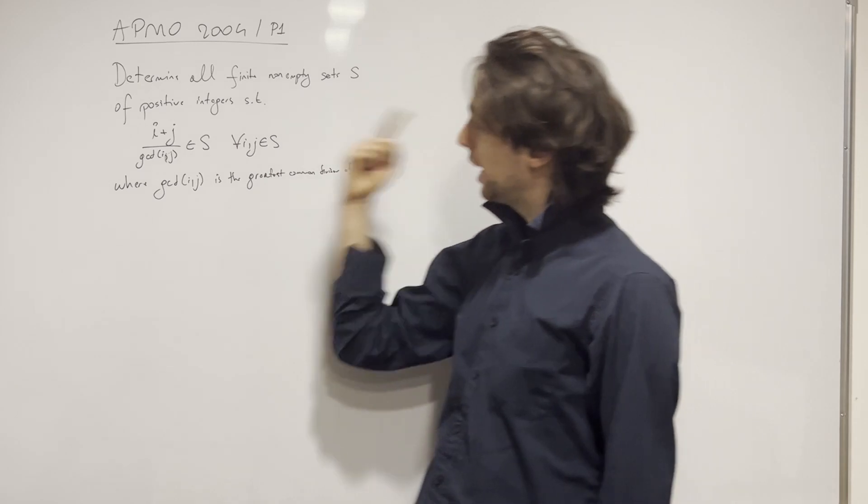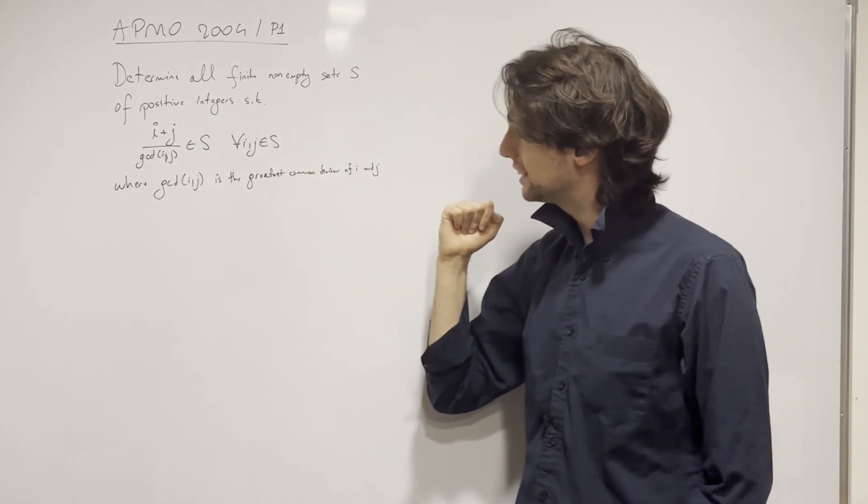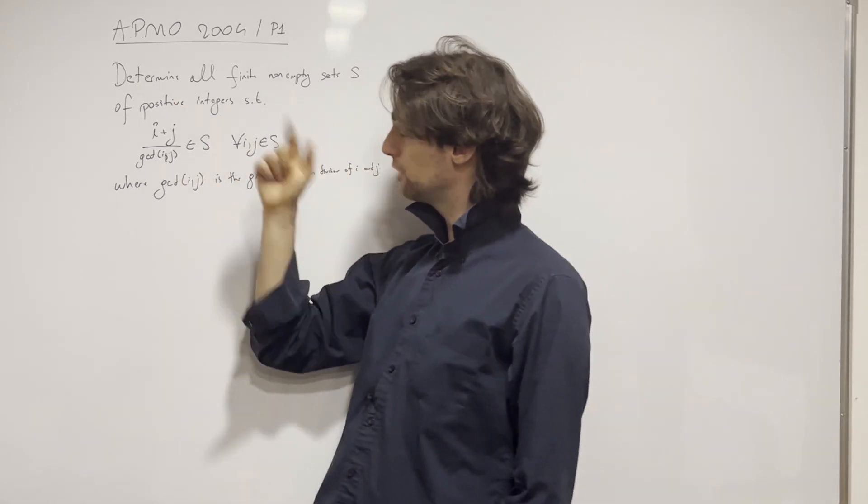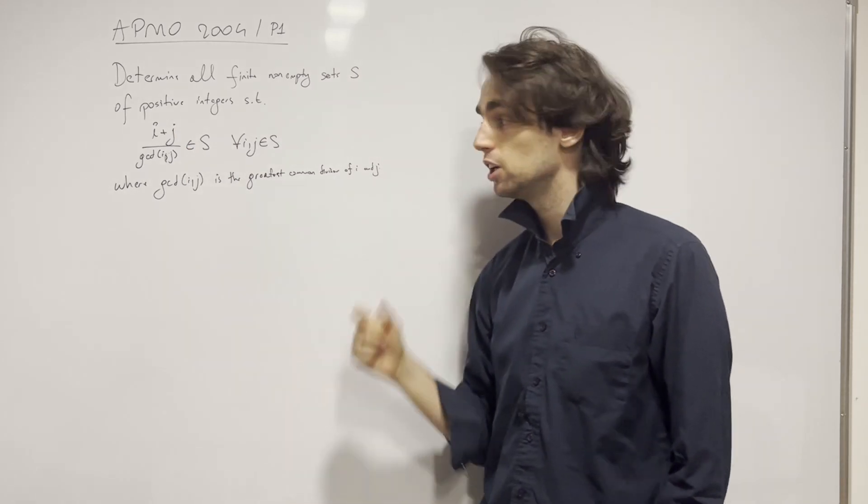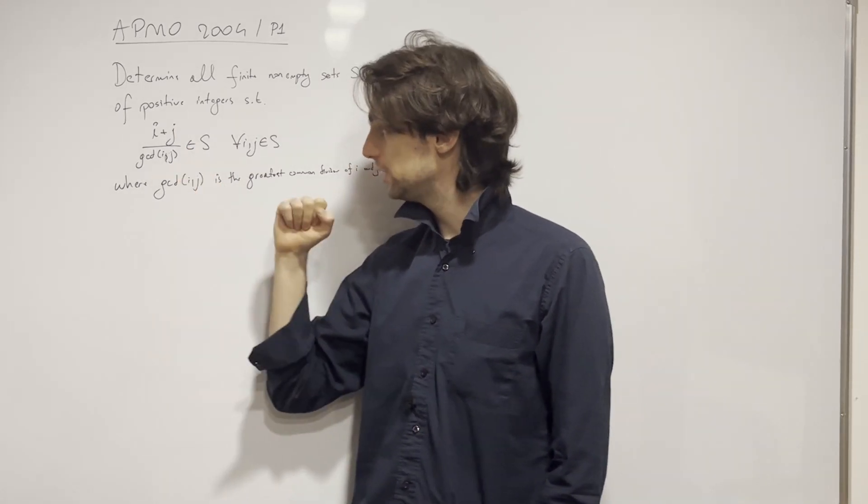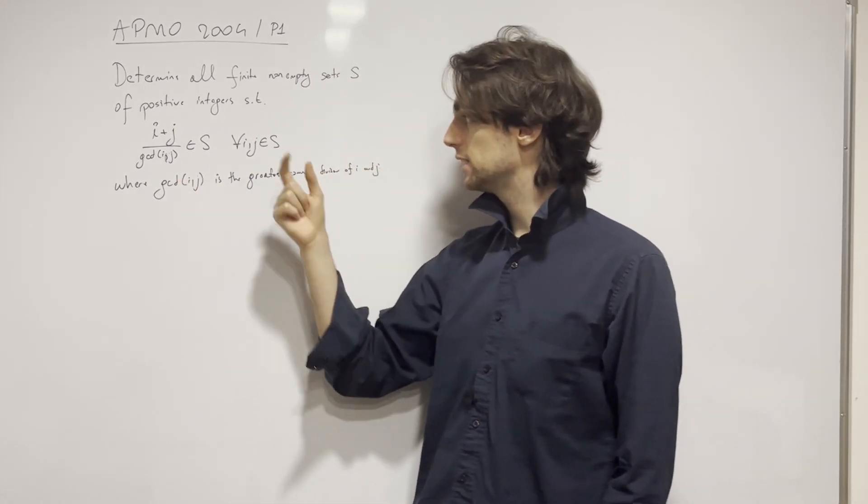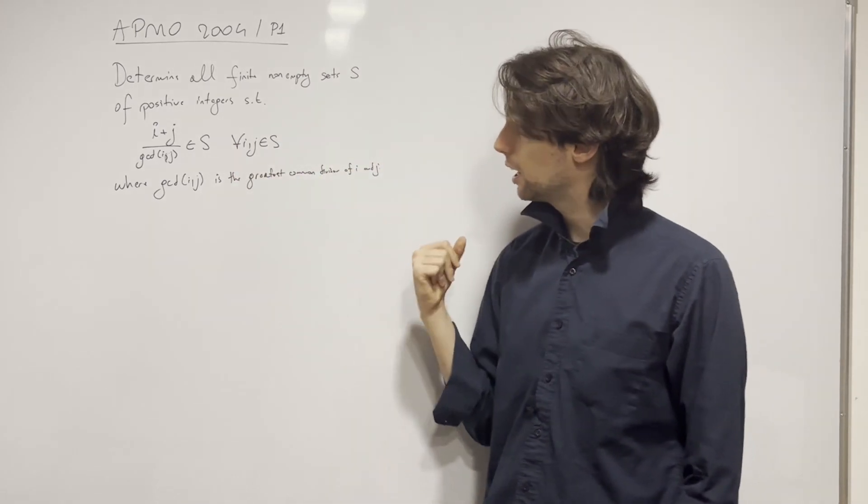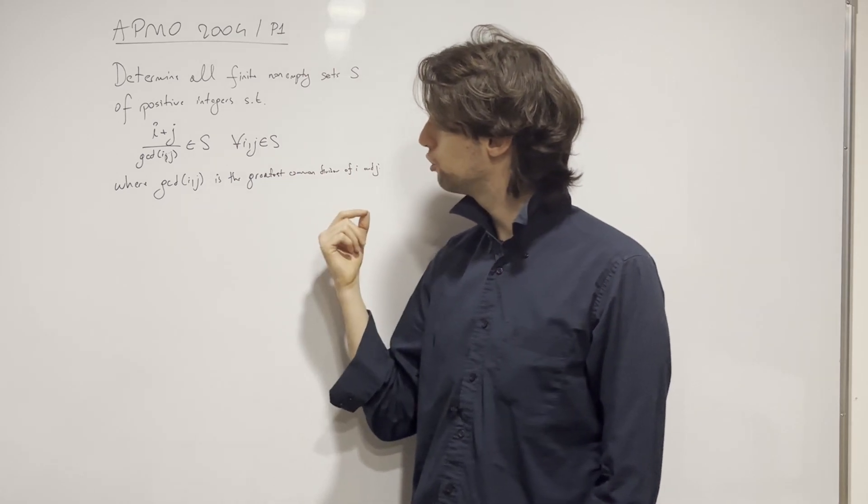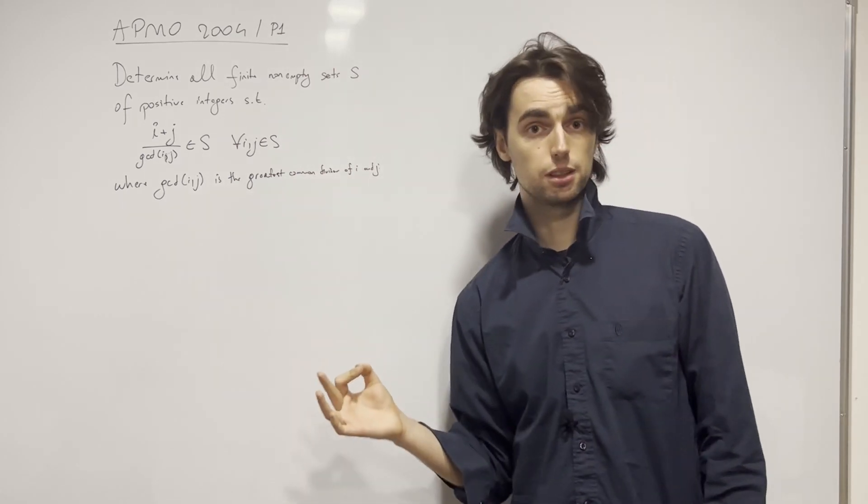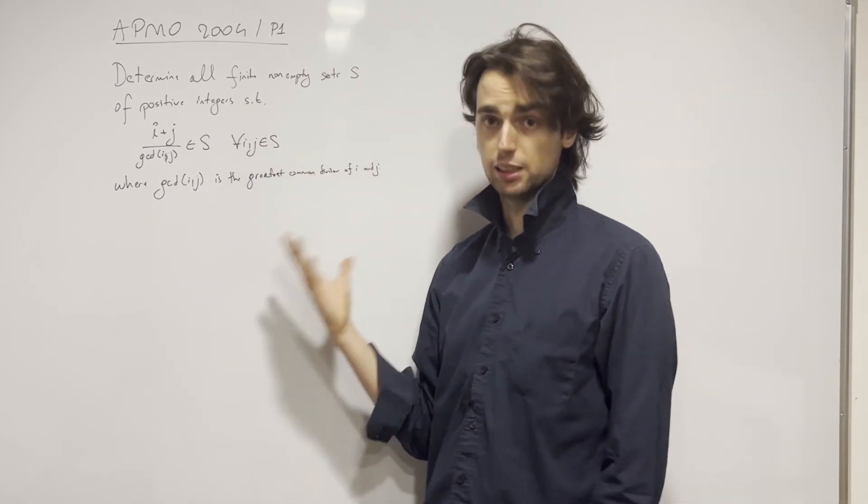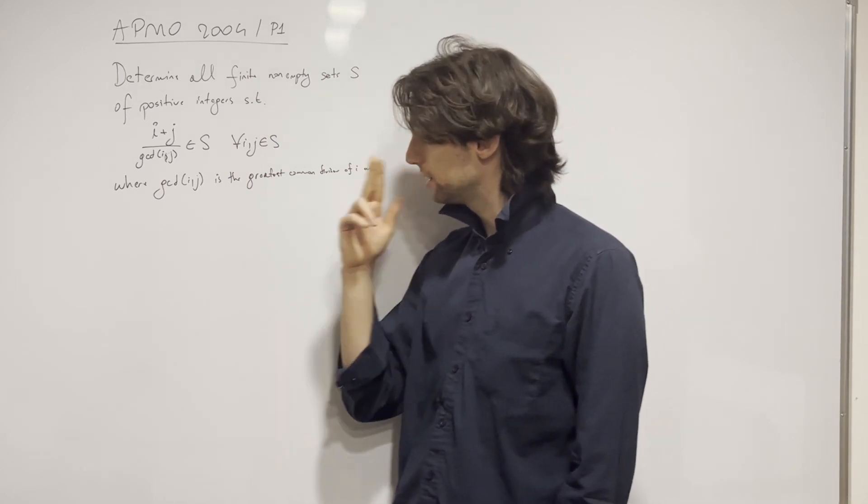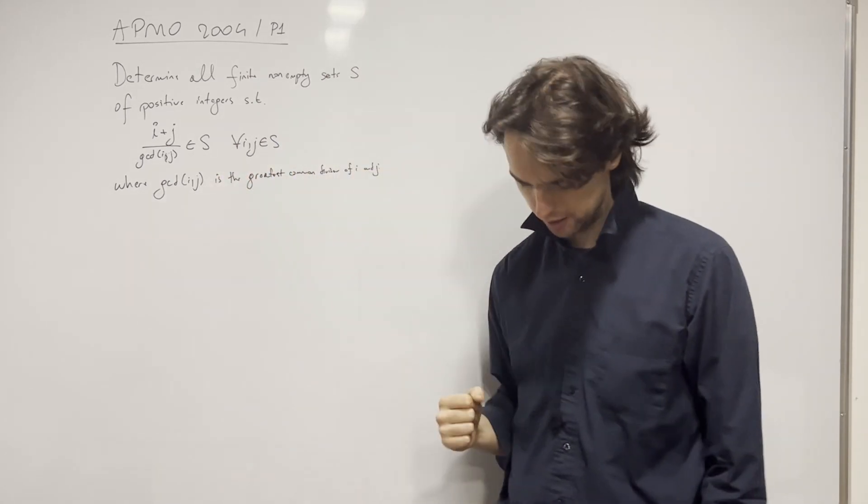So it says find all finite non-empty sets S of positive integers such that (i+j)/GCD(i,j) is an element of S for every i and j that are in S. And here, I actually didn't say this, but i and j don't have to be different, they can be the same. And now, with the GCDs, we're going to come to the divisor.